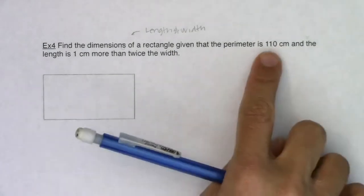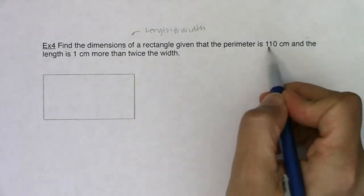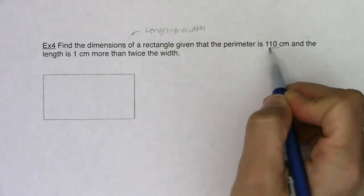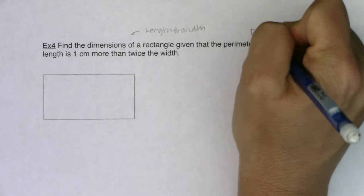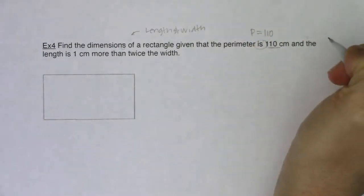And it's actually telling me the perimeter is 110 centimeters. So that's not a variable, that is constant. The perimeter is, we see the equal sign, so I know the perimeter is equal to 110 centimeters. I'll keep that in mind.